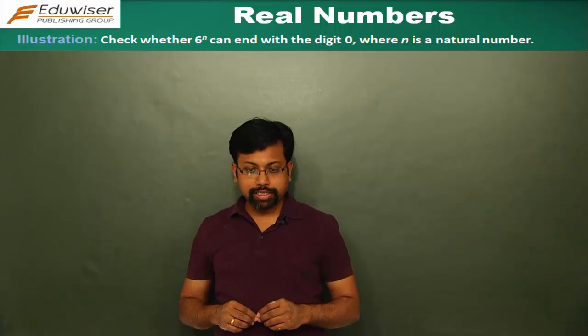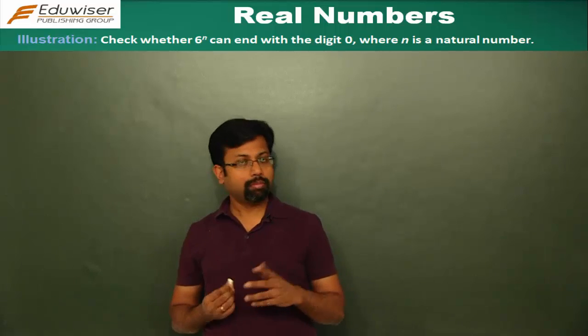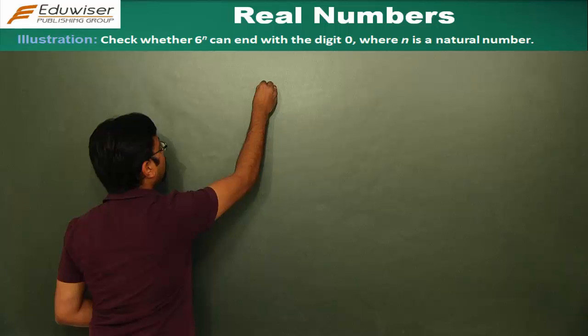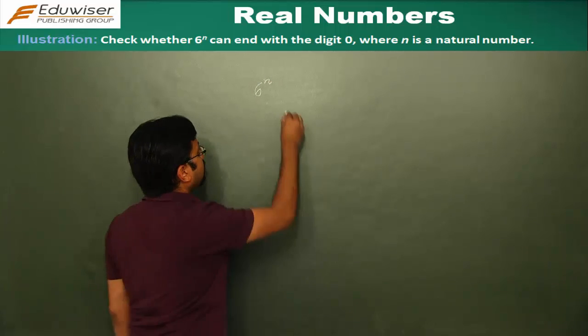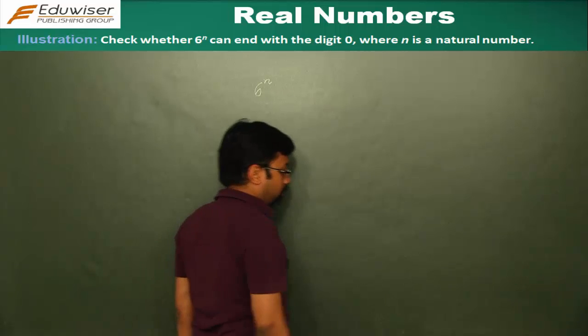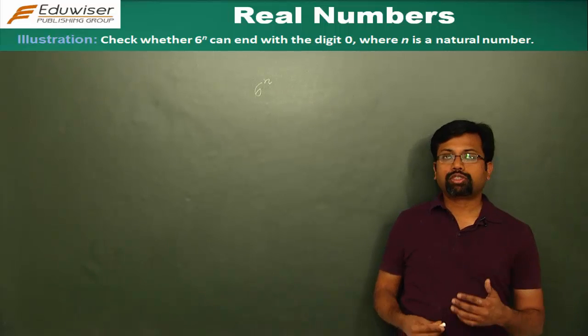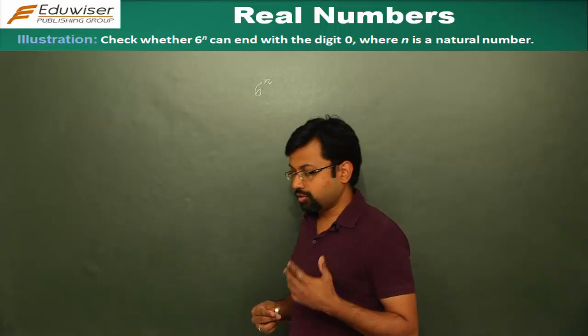The next question asks us to check whether 6 to the power n can end with the digit 0, where n is a natural number. We have to find out if 6 to the power n ends with a 0. If you expand it, multiply it and find out what the number is, we have to check whether that number would end with 0.